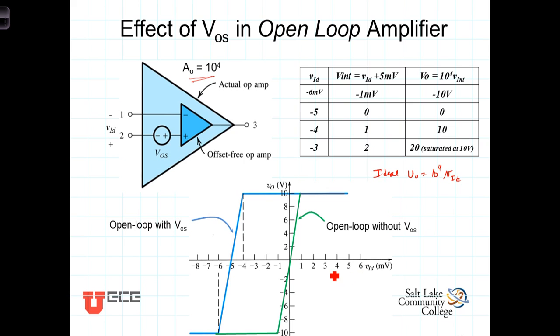For VI sub D equaling 0 volts, we'll have an output voltage of 0 volts in the ideal case. And because it has such a large open loop gain, we know that very small deviations away from 0 cause the amplifier to saturate. That's in the ideal case.